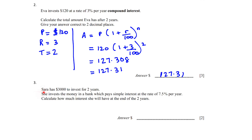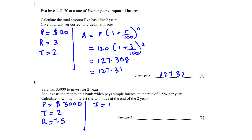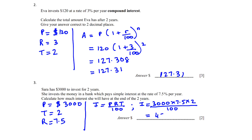Question 3: Sarah has $3,000 to invest for two years. She invests in a bank paying simple interest at 7.5% per year. Calculate how much interest she will have at the end of two years. Principal = 3000, T = 2, R = 7.5. Using I = PRT/100: I = 3000 × 7.5 × 2 ÷ 100 = $450.